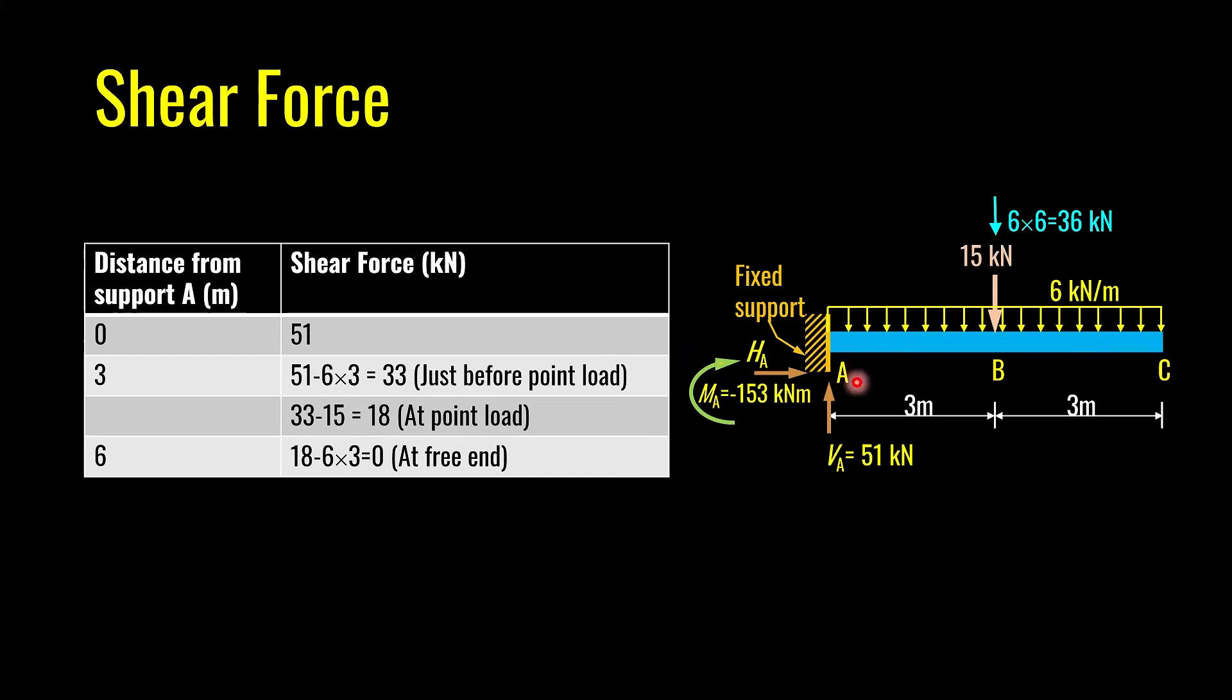Starting at point A, I will just have one vertical force, which is upwards. It is 51 kN. At point B, just before this point load, I have upward force and take away total load generated due to uniformly distributed load. The uniformly distributed load is spread on three meter span, so six times three. I'm just considering just before B, and this leads to 33 kN. At point B, all you have to do is subtract this point load from whatever loading you had at that point. So 33 take away 15 gives 18.